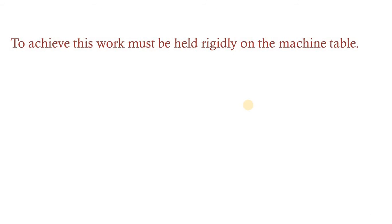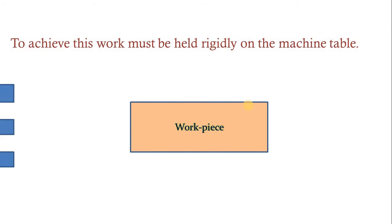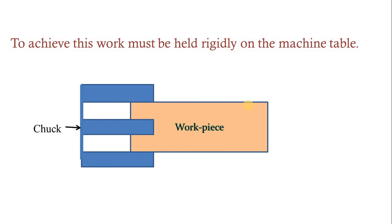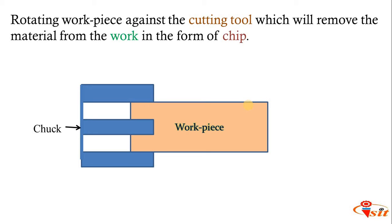To achieve this, the work must be held rigidly on the machine. The work piece is held with a chuck. Whenever we are doing operations on the lathe machine, we have to hold the raw material tightly with the help of a chuck — which can be of different types: three-jaw chuck or four-jaw chuck. A rotational motion is given to the work piece against the cutting tool, which removes the material from the work piece in the form of chips.